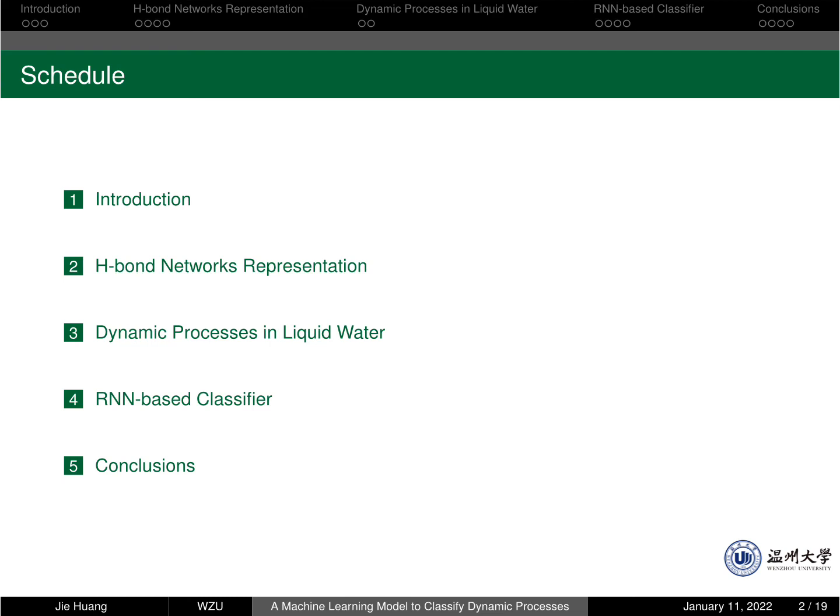I'm going to talk about the following parts. In the first part, I will give a brief introduction to why it is important to study the property of water. In the second part, I will show you how to represent hydrogen bond networks in liquid water. In the third part, I will show you different dynamic processes in liquid water from computer simulation. In the fourth part, we build an RNN-based classifier to find specific dynamic processes. And finally, I will draw conclusions of our work.